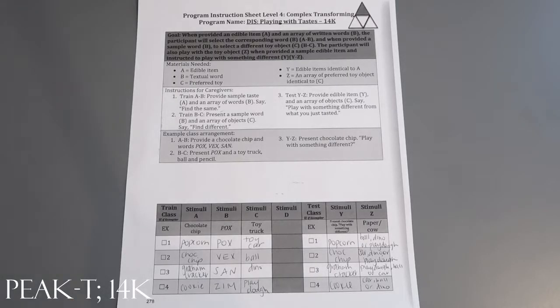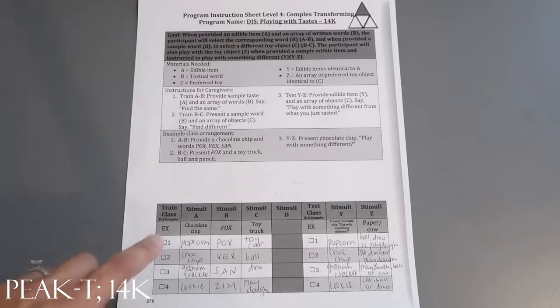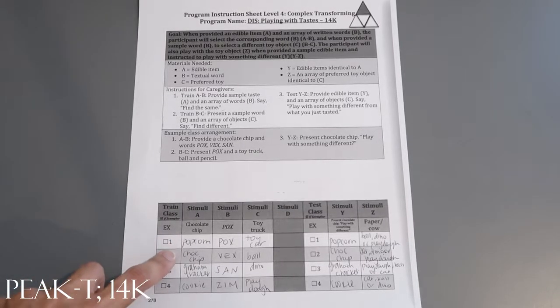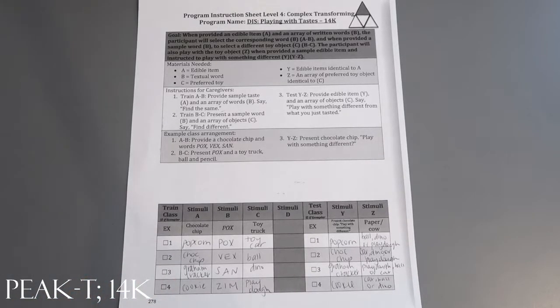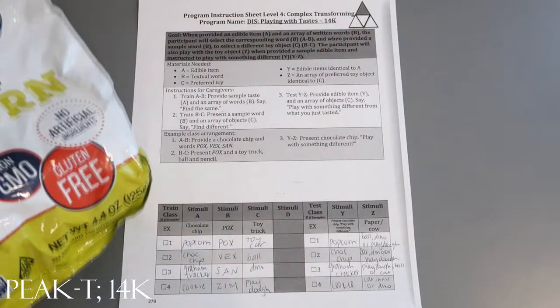This is a PEAK Transformation Program, Playing with Taste 14K, and this is a materials sample. First, the materials you're going to need for stimuli A are edible items. For us, we use popcorn, chocolate chips, graham crackers, and cookies. We have all of our food ready to go for this program.